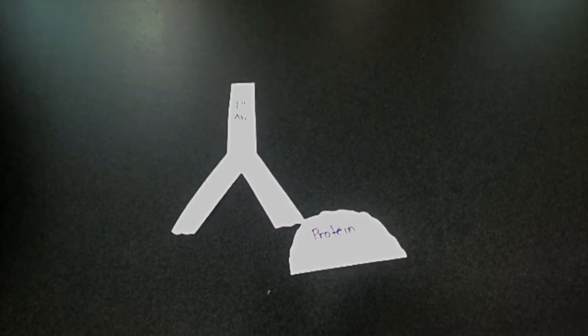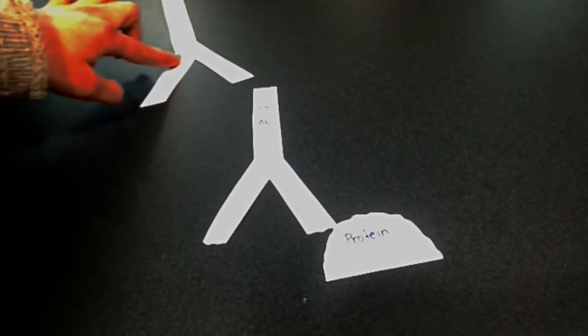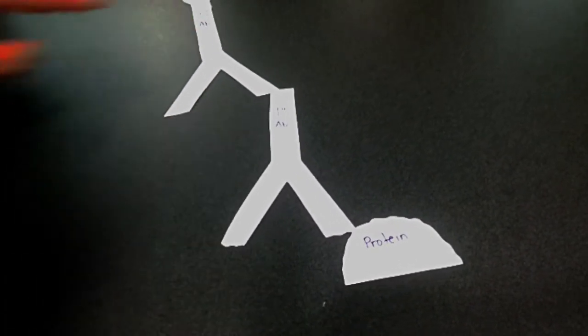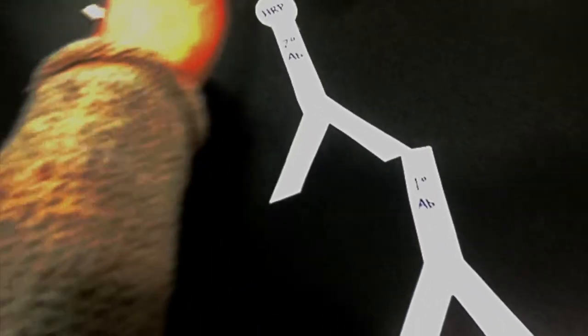A second antibody directed against your primary antibody is then added. This will amplify the signal, as multiple secondary antibodies can bind to a single primary antibody.